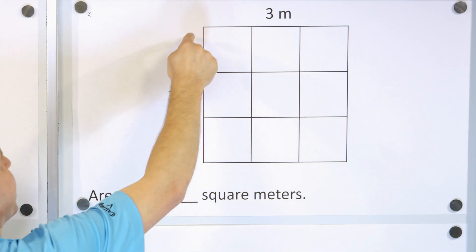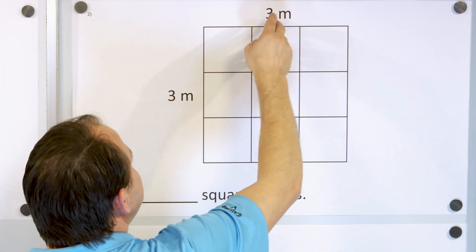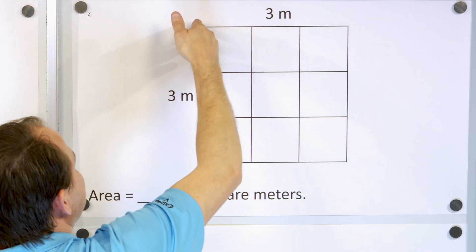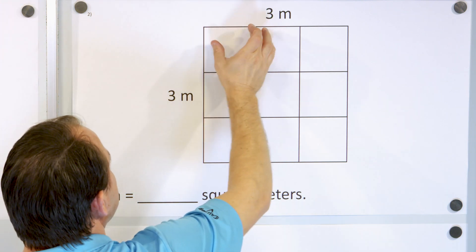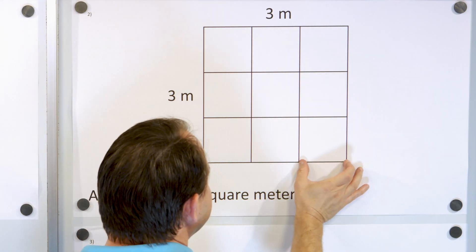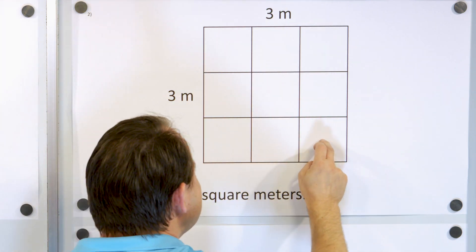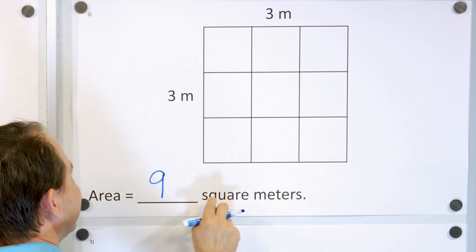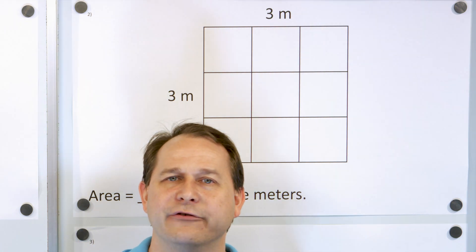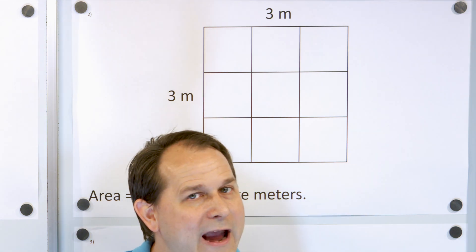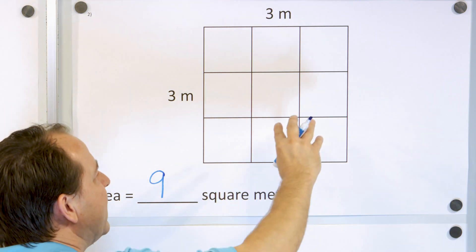Now we have another object that is three meters tall — notice the unit is meters — and three meters wide. Because it's three meters, we chop it into three pieces this way, and three pieces this way, making each piece one meter. So how many square meters do we have? One, two, three, four, five, six, seven, eight, nine square meters. Notice the unit is not meters — you do not measure area in meters, centimeters, or inches. You measure area in square meters, square inches, and square centimeters, because we're trying to count squares.